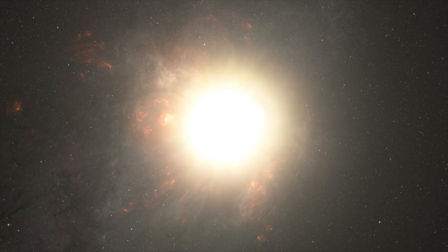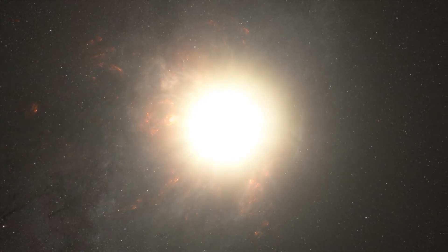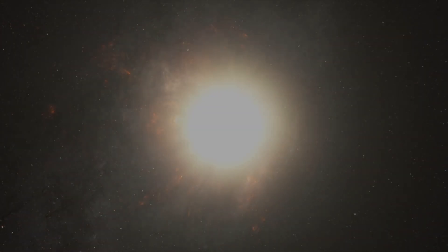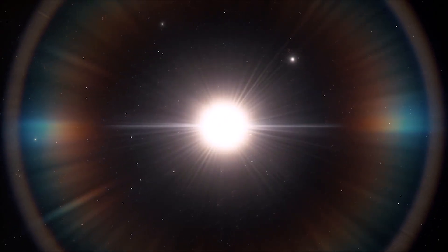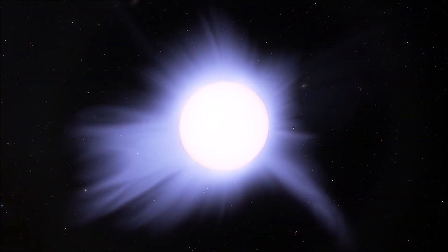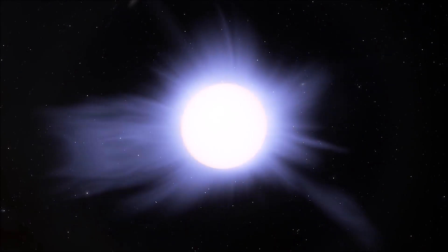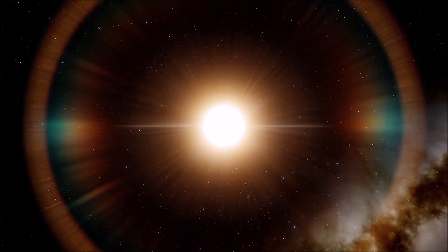To give you a numerical comparison, the radius of our sun is about 696,000 kilometers (432,000 miles), while Stevenson 2-18's radius is estimated to be over 1.5 billion kilometers (930 million miles).